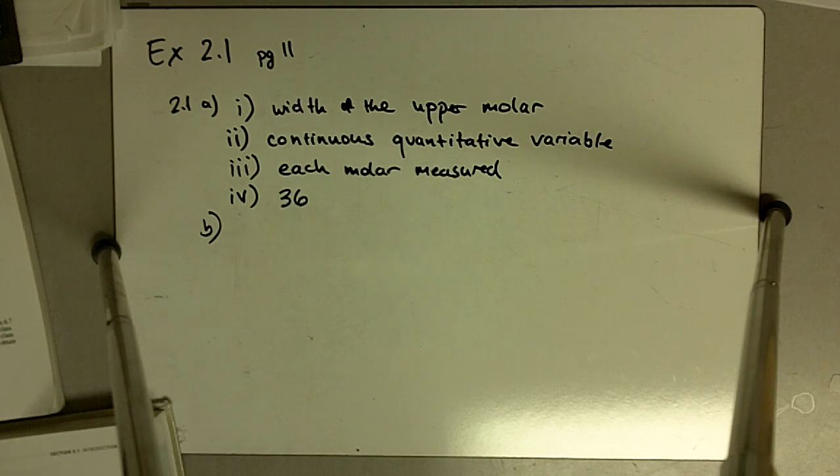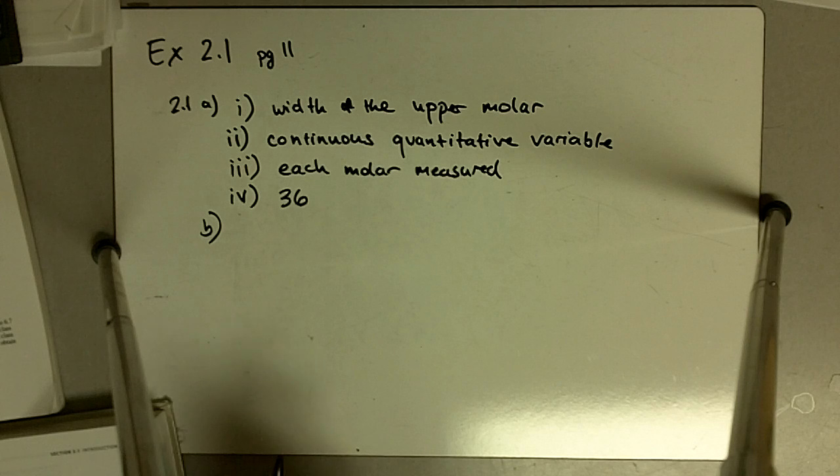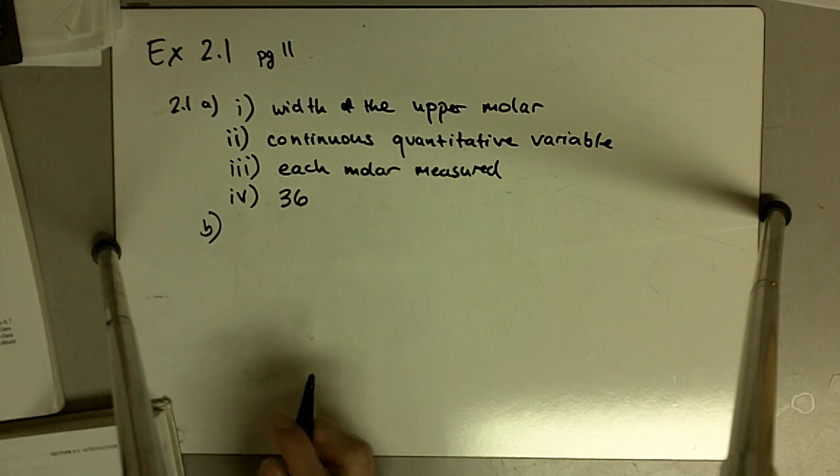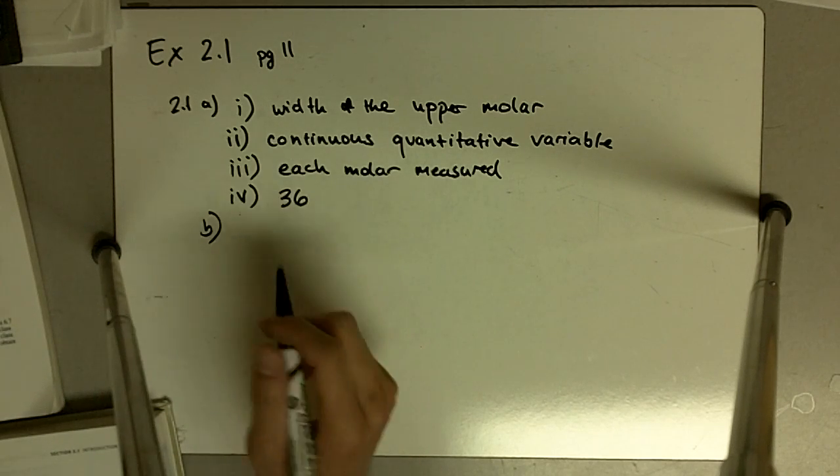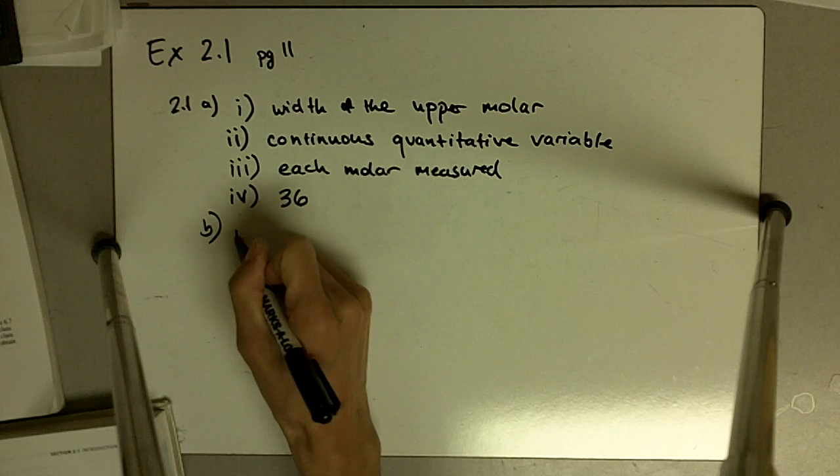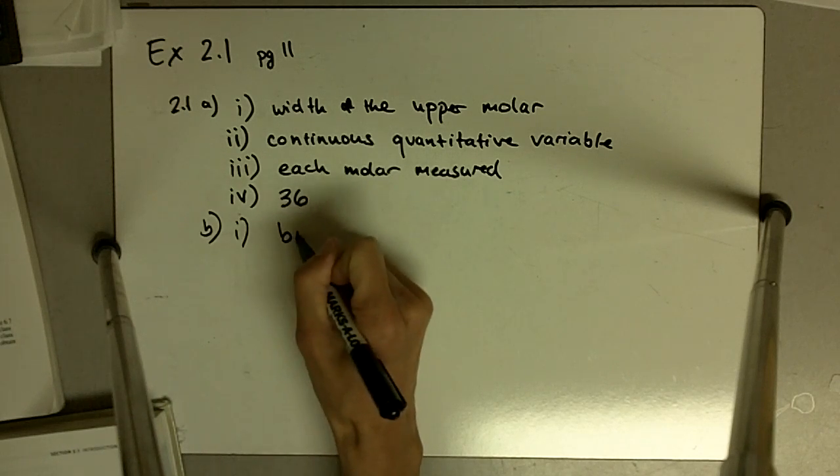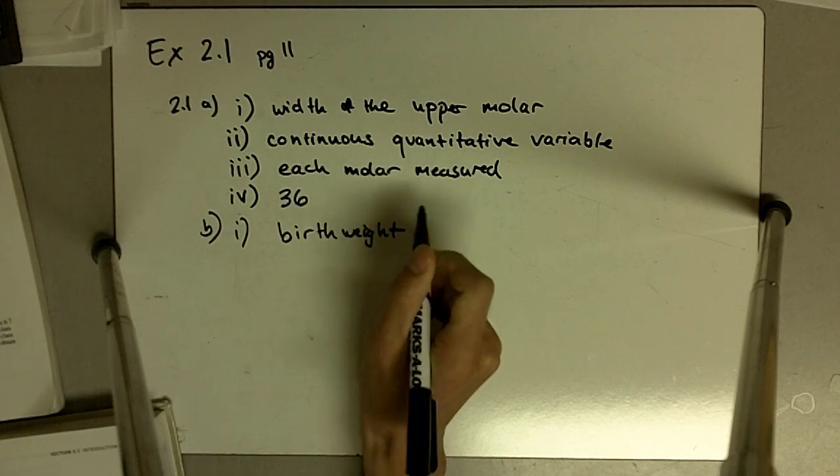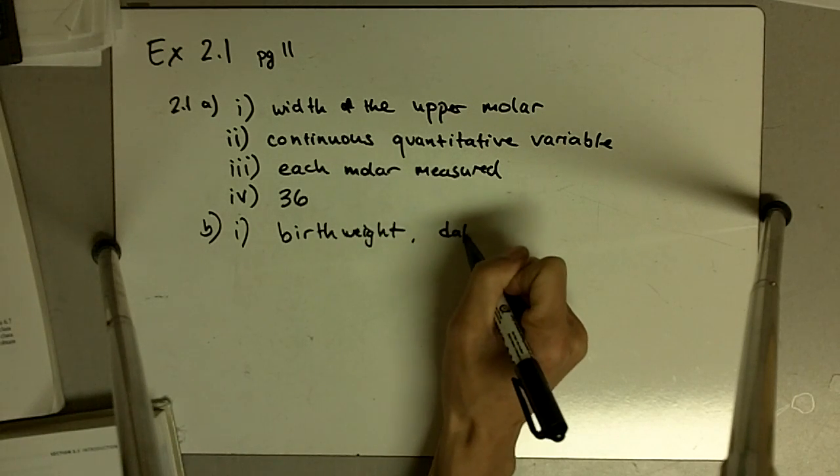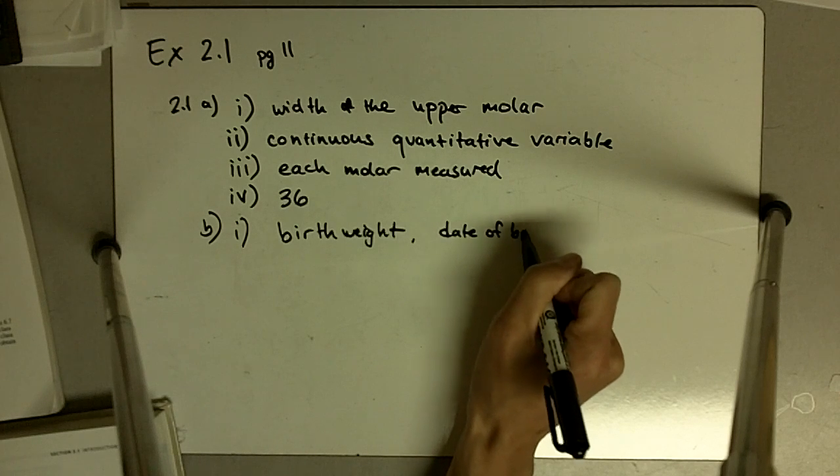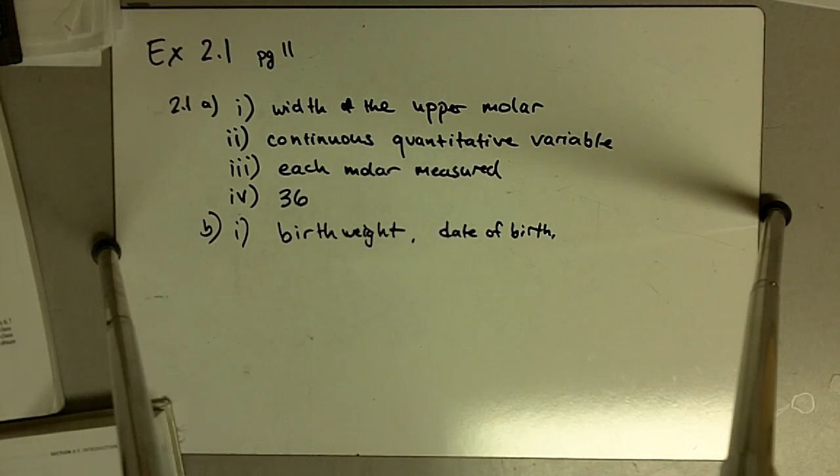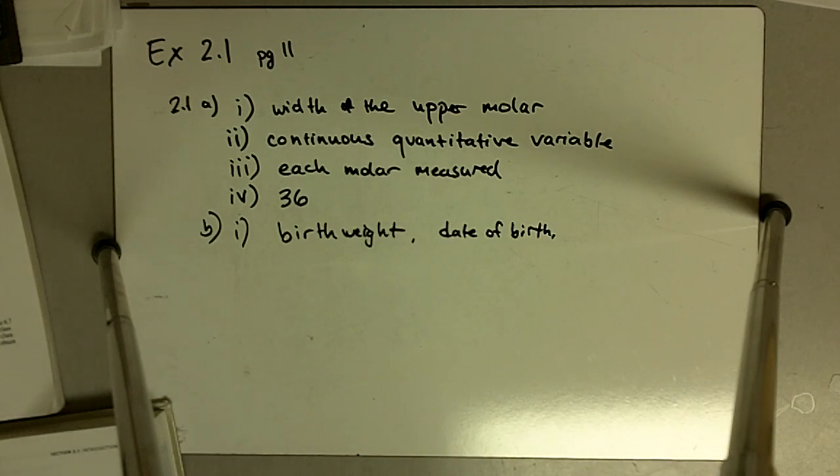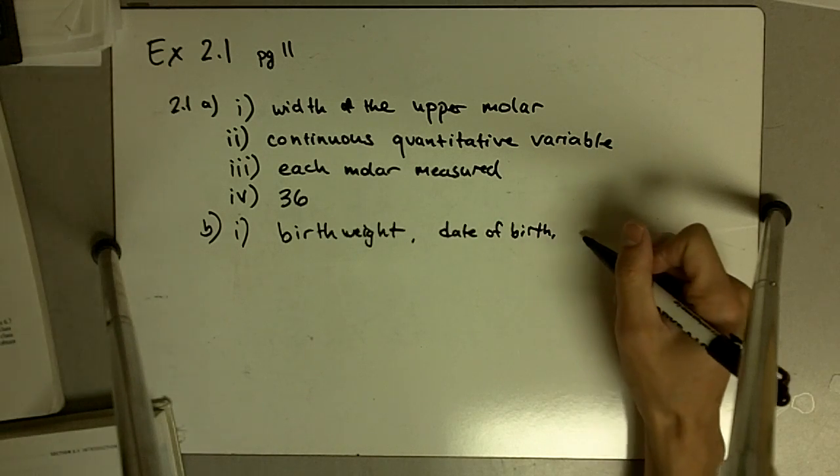Part B then reads the birth weight, date of birth, and the mother's race were recorded for each of 65 babies. So here we actually have three variables. We have birth weight of the baby, we've got date of birth of the baby, and we have the mother's race.